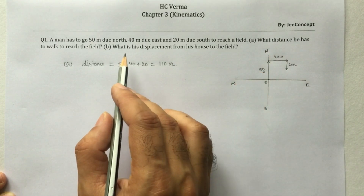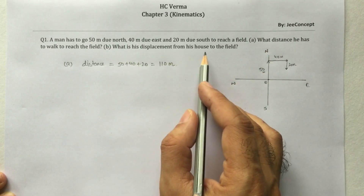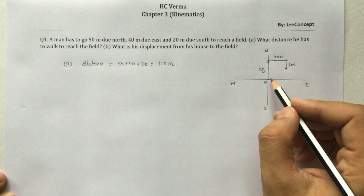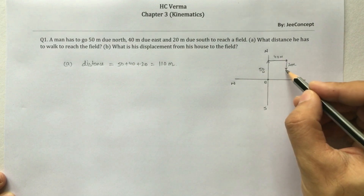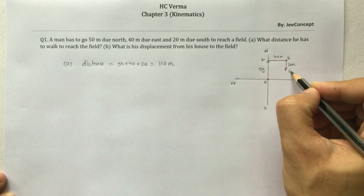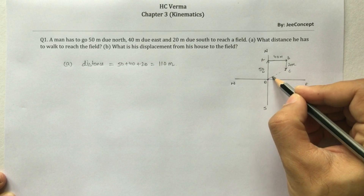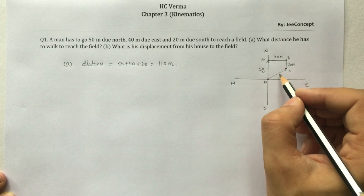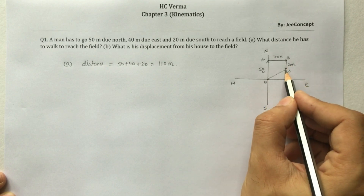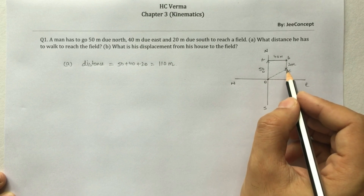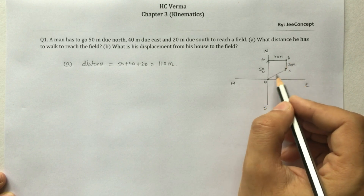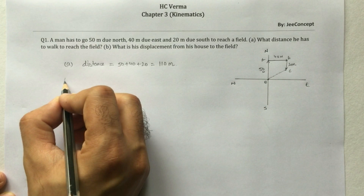For the second part, we have to calculate the displacement from his house to the field. Displacement is a vector quantity. Let the points be O, A, B, and C — we have to calculate OC, which is the final displacement. To get displacement, convert all these paths into vector form and find the resultant, which is the addition of all those vectors.